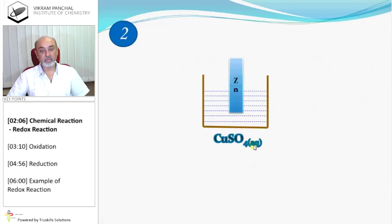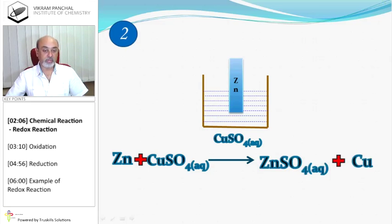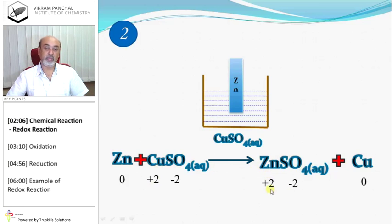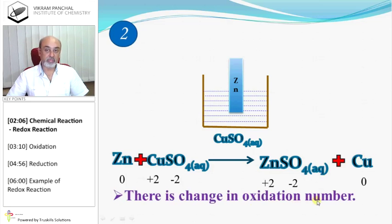Second type of chemical reaction: if we keep a zinc strip in copper sulfate solution, then zinc reacts with CuSO4 and produces ZnSO4 plus Cu. Now we find the oxidation number of each. SO4 is -2, therefore Cu is +2 in CuSO4. In zinc sulfate, SO4 is -2, therefore zinc is +2, and copper as an element is 0. There is a change in oxidation number: zinc goes from 0 to +2 (increasing), and copper goes from +2 to 0 (decreasing).